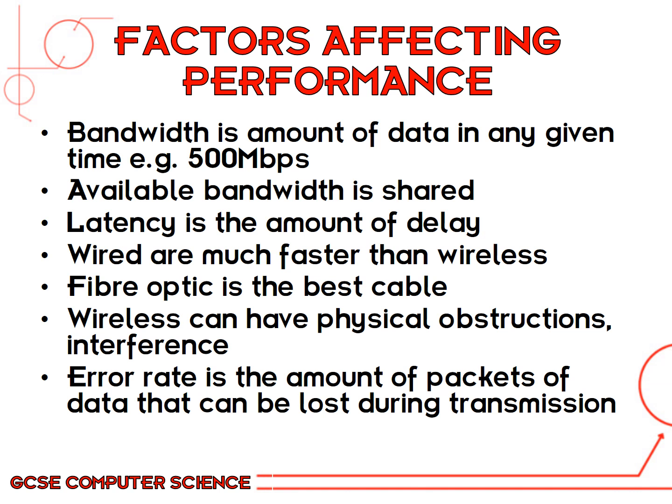Wired networks are much faster than wireless, so one major thing affecting performance is how many wired versus wireless connections you have. The type of cable you use can also affect performance — fiber optic is the fastest cable. Wireless can often have physical obstructions and interference; in a big office building or school, the walls between classrooms and offices will cause interference. Error rate is the amount of packets of data that can be lost during transmission — how many packets are lost when you're trying to send a file. With wireless connections, packets can often be lost due to interference or obstructions on the network.